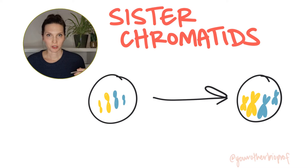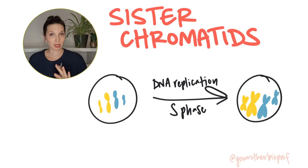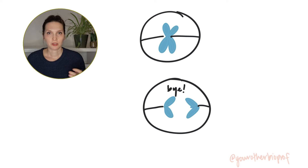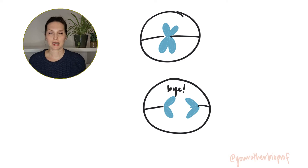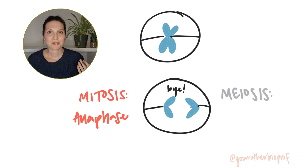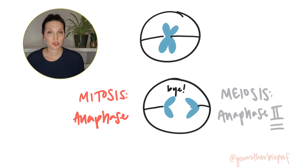DNA replication occurs during the S phase before both mitosis and before meiosis one. That's going to produce replicated chromosomes — our X-shaped chromosomes that have two sister chromatids. These sister chromatids are going to be separated from one another, pulled apart towards opposite ends of our dividing cells. In mitosis, this happens during anaphase. In meiosis, the separation of sister chromatids happens in the second division during anaphase two.